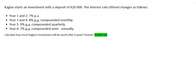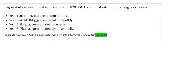So here we have a guy called Kajiso and he starts an investment with a deposit of 20,000 Rand. Then the interest rate that this financial institution offers is going to change. For the first two years, year one and year two, it'll be seven percent per annum. I just added compound interest there just so that people don't think it might be simple interest. Year three and four, eight percent compounded monthly, year five and then year six. So it's a six-year investment. Let's see how that works.